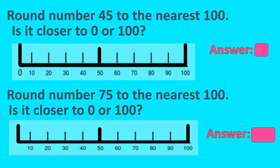Now do these examples by yourself, my children — I am not going to help you. I know my children are smart and they will do it by themselves. Round number forty-five to the nearest hundred: is it closer to zero or hundred? It is closer to zero. Round number seventy-five to the nearest hundred: is it closer to zero or hundred? It is closer to hundred, so the answer will be hundred. Easy, isn't it, children?